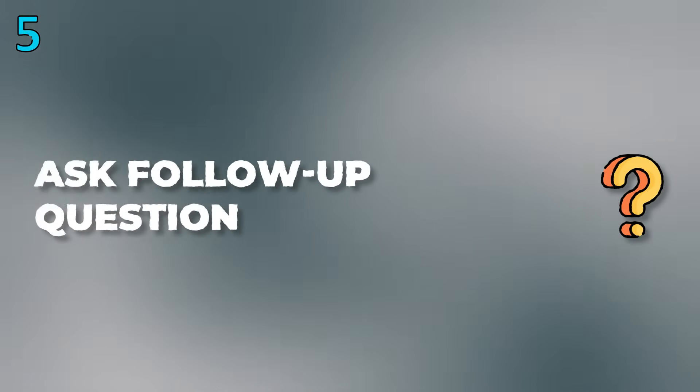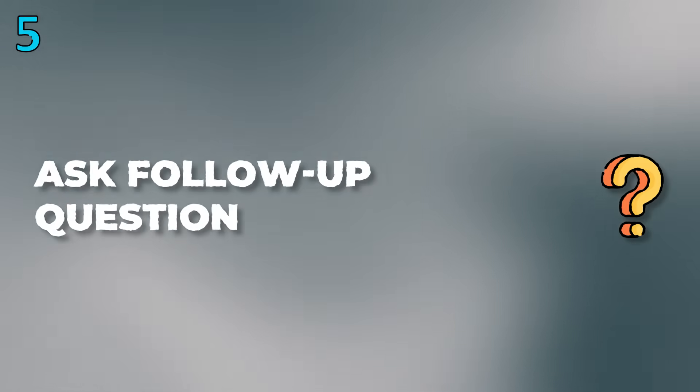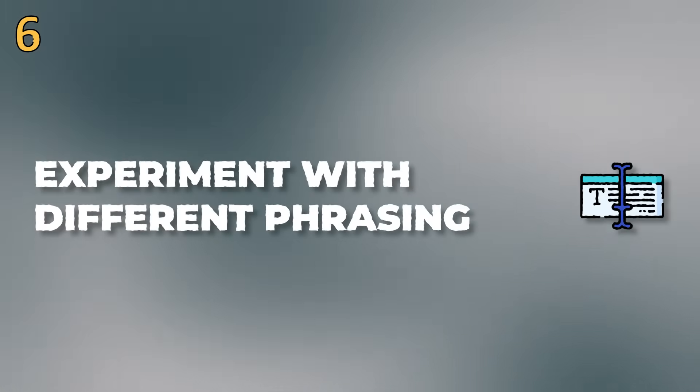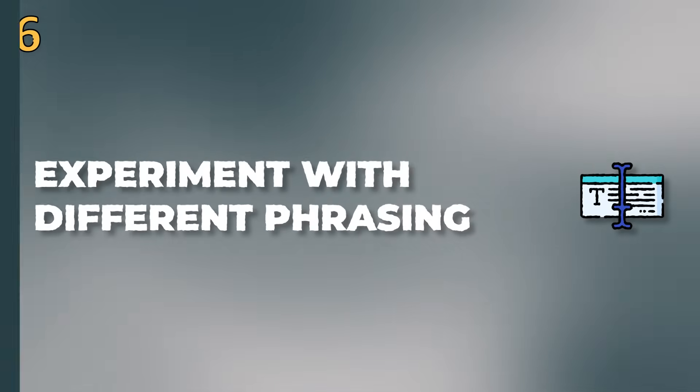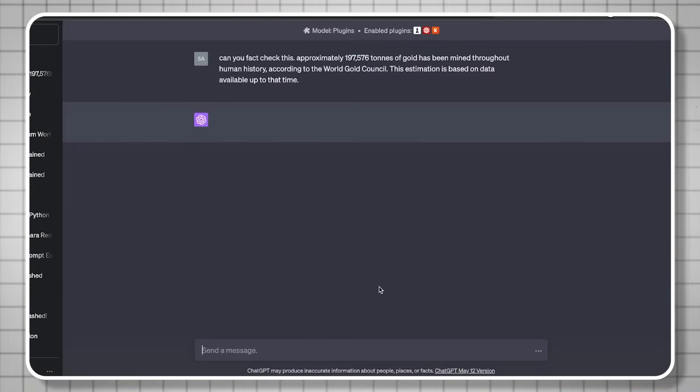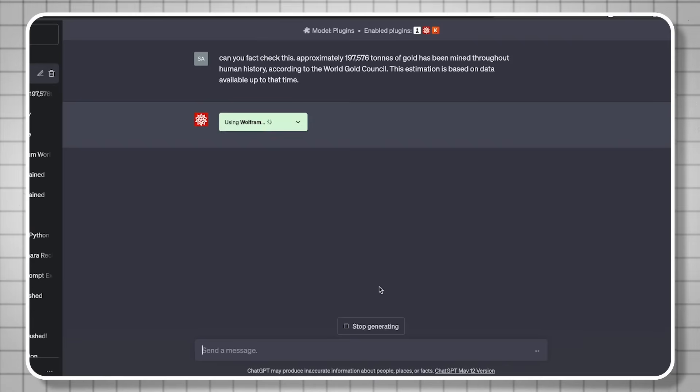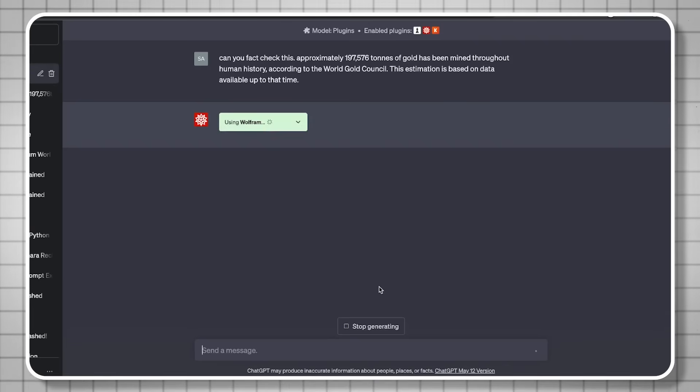Number five: follow up with questions, because even with the perfect prompt you may still need to clarify or adjust inputs. Number six: if you don't get the result you're looking for, experiment with different phrasing — sometimes the model doesn't understand how you phrased it, but this formula used in order will get you the result most of the time. Number seven: do a fact-checking prompt — feed your results back and ask 'can you fact check this?' to ensure it runs through one more time.